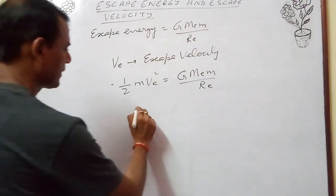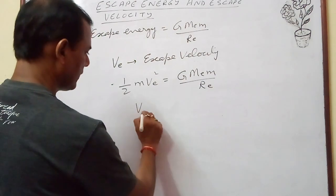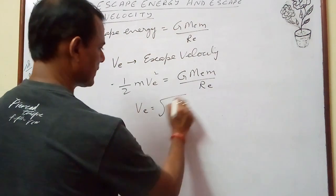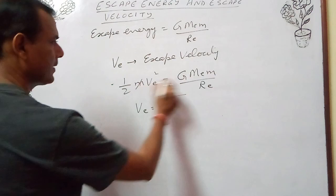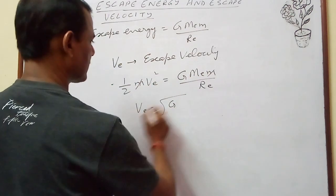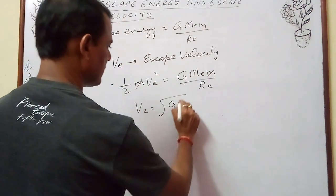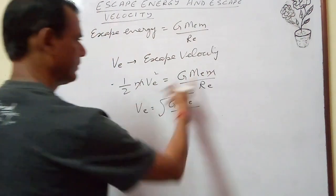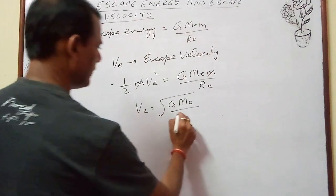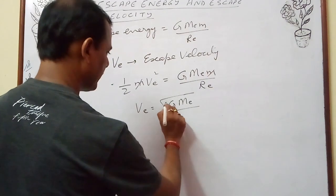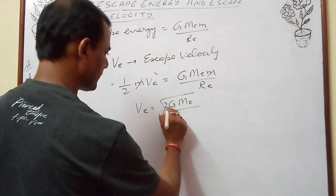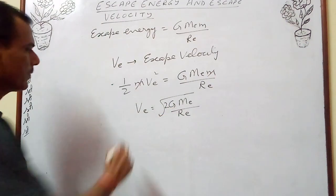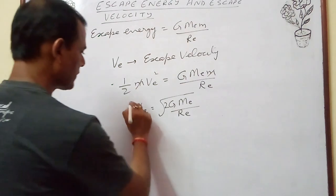On solving, the m's cancel, and you get Ve equals the square root of 2·G·Me/Re. This is the formula for escape velocity.